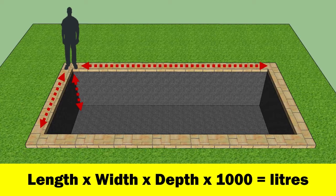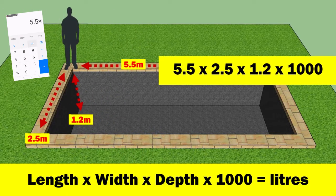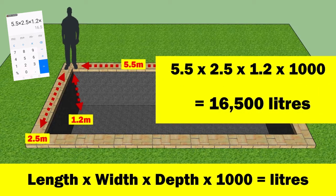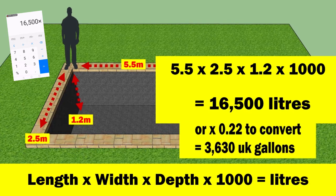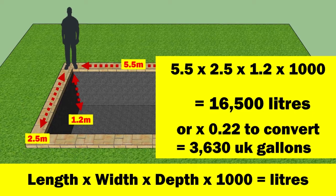So let's say my pond is 5.5 meters long, 2.5 meters wide, and it has a depth of 1.2 meters. 5.5 multiplied by 2.5 by 1.2 by 1000 equals 16,500 liters. To convert the result to gallons, just multiply it by 0.22 — that's 3,630 gallons. Assuming that you've measured everything accurately, your calculations are going to be very accurate.